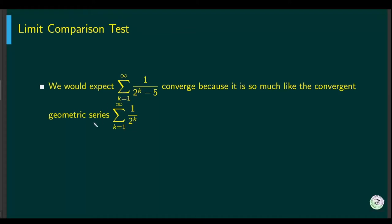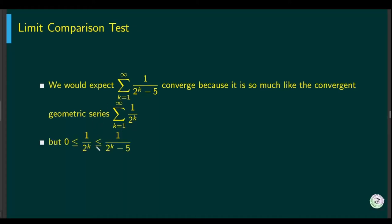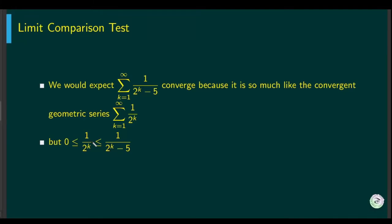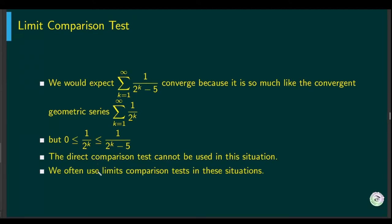We can try to use the direct comparison test here. But the problem is 1 over 2^k is less than 1 over 2^k minus 5. We want the inequality the other way around. So we cannot use the direct comparison test in this situation. We often use the limit comparison test in this type of situation.